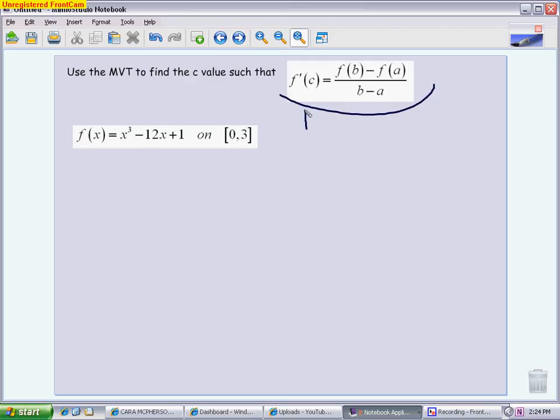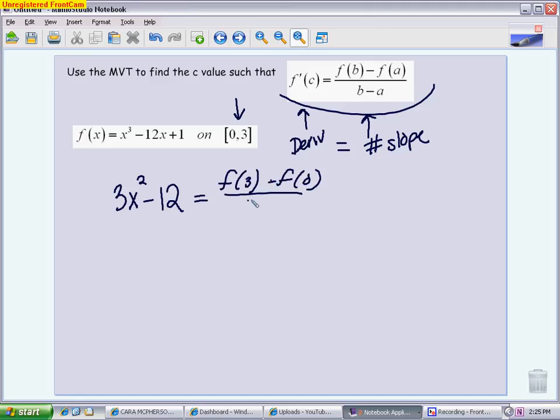This side is where you put the derivative. This side is going to be a number, it's going to represent slope. You're going to set them equally to each other and solve for x. You're looking for an answer that is inside this interval. So if you get any answers that are outside that interval, we will toss them out. So first, we're going to take the derivative. Derivative is 3x squared minus 12. Derivatives should be pretty easy. On the right side, here's where a calculator will help you with some computation. We want to figure out f of 3 minus f of 0 over 3 minus 0.